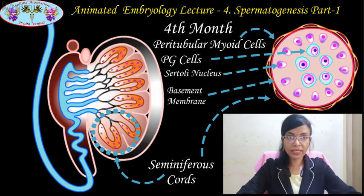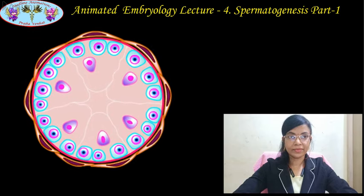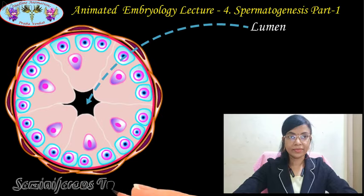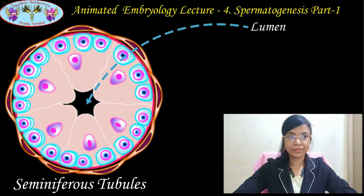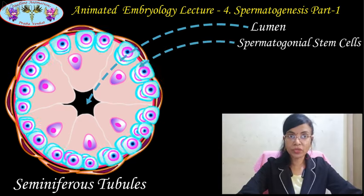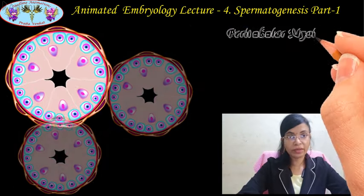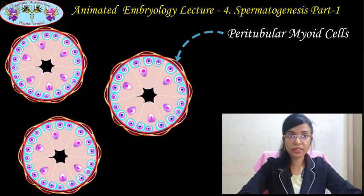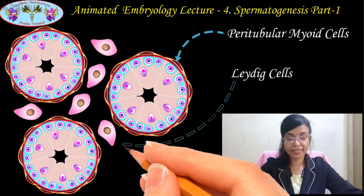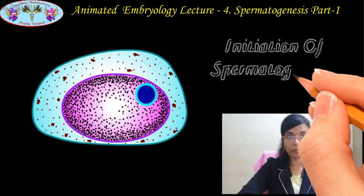This whole structure will wait until puberty to proceed further. Shortly before puberty, due to hormonal changes, the solid seminiferous cords acquire a lumen and become the seminiferous tubules. At the same time, the primordial germ cells are also converted into spermatogonial stem cells. The newly formed seminiferous tubules are lined with spermatogonial stem cells and large Sertoli cells resting on the basement membrane, covered with peritubular myoid cells. Each seminiferous tubule has a lumen in the center, and between the seminiferous tubules in the interstitium are the Leydig cells. The formation of spermatogonial stem cells initiates the process of spermatogenesis.